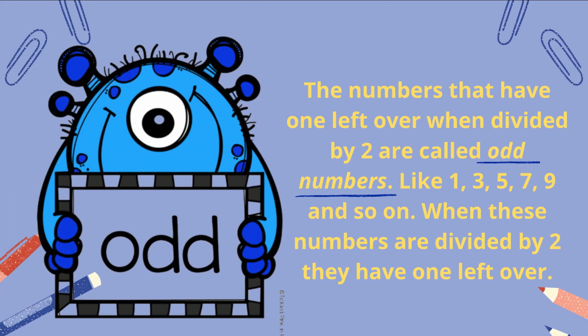The numbers that have one left over when divided by two are called odd numbers, like one, three, five, seven, nine, and so on. When these numbers are divided by two, they have one left over.